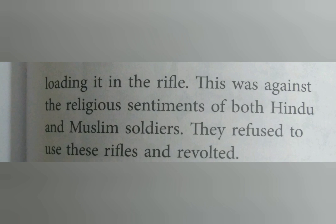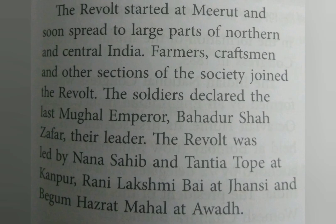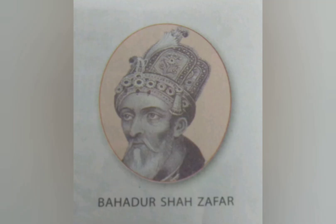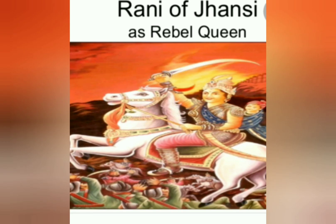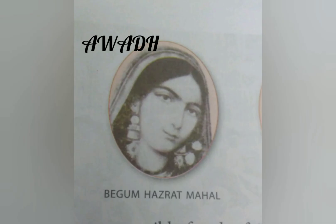The revolt started at Meerut and soon spread to different parts of the country. Farmers, craftsmen and other sections of society joined the revolt because everybody was angry. Soldiers declared the last Mughal Emperor, Bahadur Shah Zafar, as their leader. The revolt was led by Nana Sahib and Tantya Topi at Kanpur, Rani Lakshmi Bai at Jhansi, and Begum Hazrat Mahal at Awadh. Different parts had different leaders.